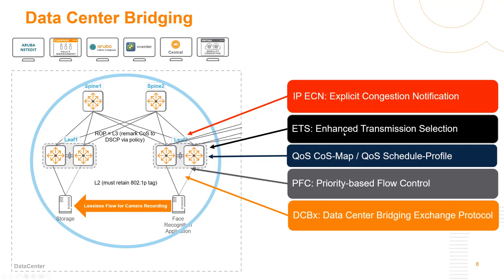We're also going to layer on enhanced transmission selection, as well as ECN over layer 3 links. We're going to largely configure this with quality of service, class of service maps, as well as schedule profiles. That's very interesting — do you have any live examples of the config that we can look at?